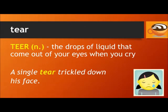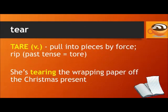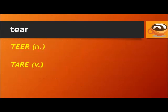The word T-E-A-R can be pronounced 'tear' or 'tear.' 'Tear' is a noun referring to the drops of liquid that come out of your eyes when you cry. For example: a single tear trickled down her face. 'Tear' is a verb, meaning to pull into pieces by force or to rip — the past tense is 'tore.' For example: she's tearing the wrapping paper off the Christmas present. Tear. Tear.